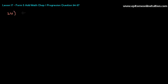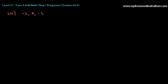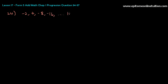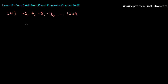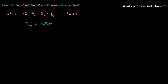The GP is 2, negative 2, 4, negative 8, negative 16, and so forth until 1024. You are going to find n — the number of terms — if the last term is 1024. Same thing as what you did in AP: Tn is equal to 1024.